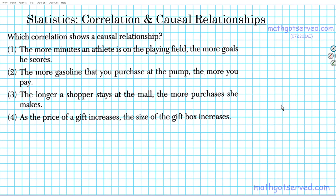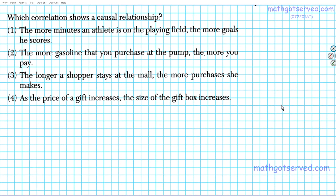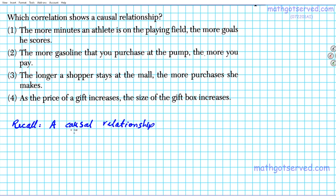Before we get started with inspecting the four problems, let's refresh our memory on what causal relationships are. Something that you want to recall is that a causal relationship — if you take a look at the name and examine it closely — you can easily determine where it originates from. It originates from the word cause. It caused something to become. So a causal relationship involves cause.